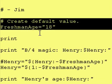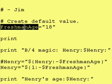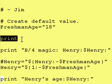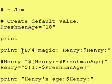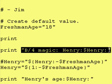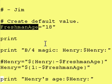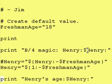Once again, we have our default age — freshman age of 18. We're still trying to get Henry's age in this example. We print a blank line, and we print what the value of the variable Henry is at this point. The only thing we've done to this point is define a variable called freshman age, so the variable Henry doesn't even exist at this point and won't have a value.